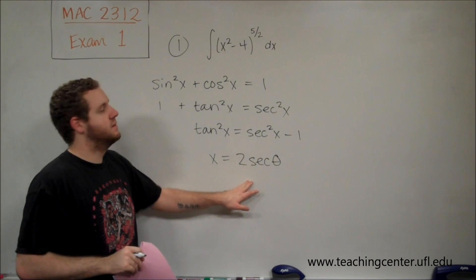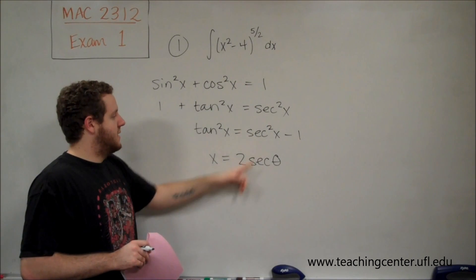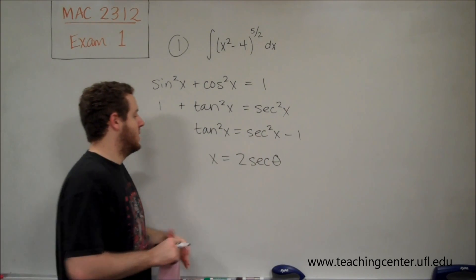So when we plug in 2 secant theta for x, we're going to get 4 secant squared theta. We can factor out the 4s and that will be the exact substitution that we want.